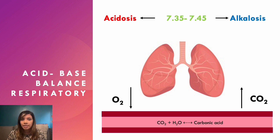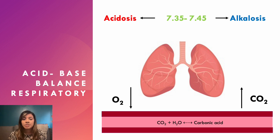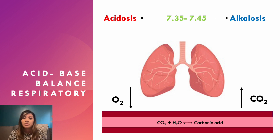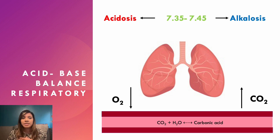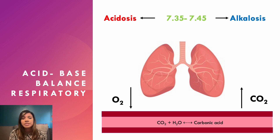When it comes to acid-base balance, there are two main mechanisms: the respiratory component and the metabolic component. Note this is an extremely simplified version aimed at DCTs. The normal pH of the blood is between 7.35 and 7.45 — the body will do whatever it can to maintain that range, because if it drops too low you become acidotic and cells don't function as well, and the same applies to alkalosis. If your pH goes under 7.35 you're acidotic; above 7.45 you're alkalotic.